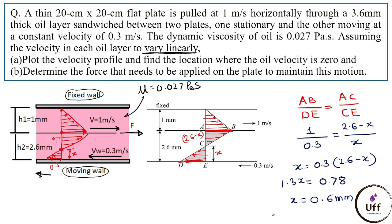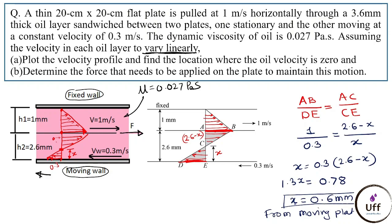This distance x is measured from the moving plate. So at a distance of 0.6 mm from the moving plate, the oil velocity is zero. This is the answer to the first question.